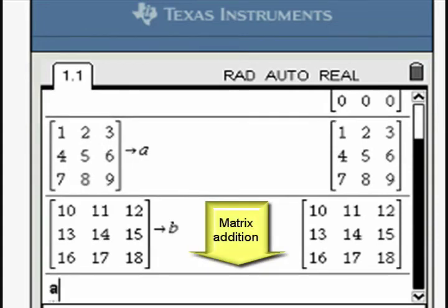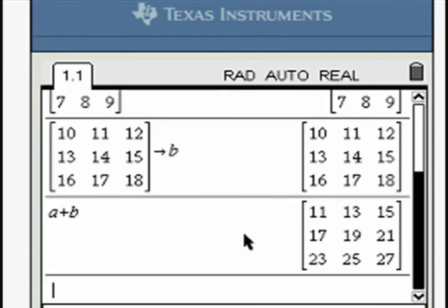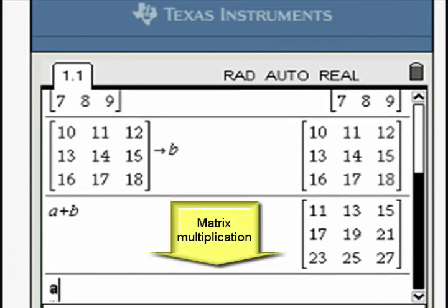Now you can combine the matrices by combining the variables. This is an example of adding the two matrices.